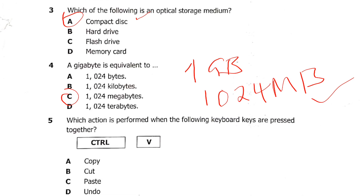Question 5: which action is performed when the keyboard keys Ctrl+V are pressed together? Is it copy, cut, paste, or undo? Ctrl+C is copy, and Ctrl+V is paste, so the answer is C — paste.